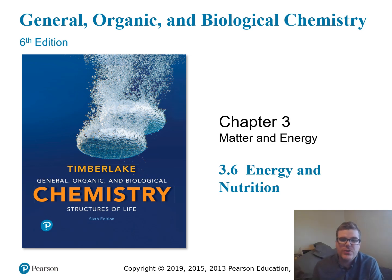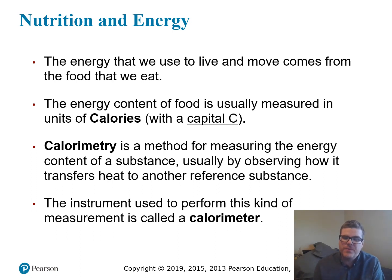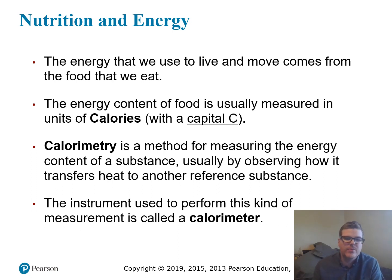Hi, this is Chapter 3, Section 6: Energy and Nutrition. We know that the energy we need to live, breathe, and move comes from the food we eat. The energy in food is a form of chemical energy, which is actually a form of potential energy — stored in the arrangements of atoms in matter or in the bonds between atoms.